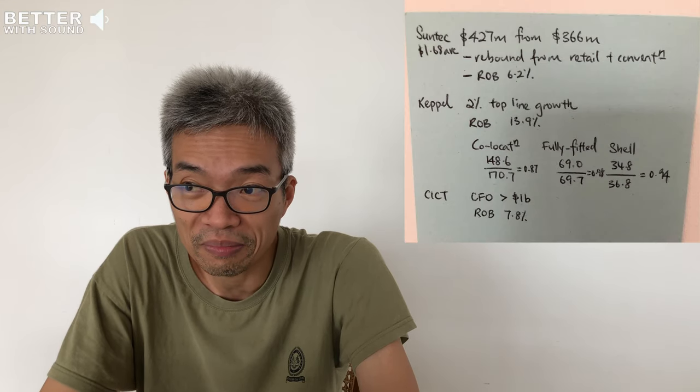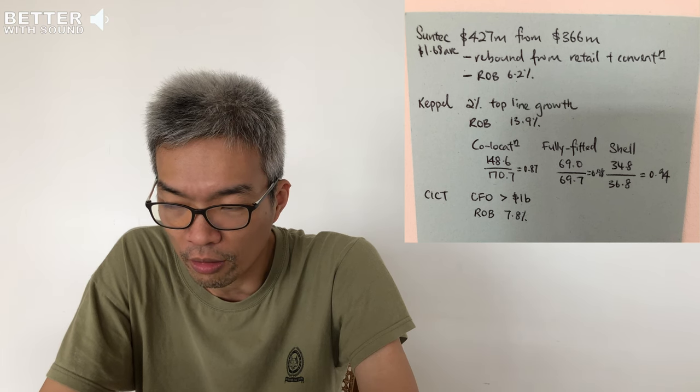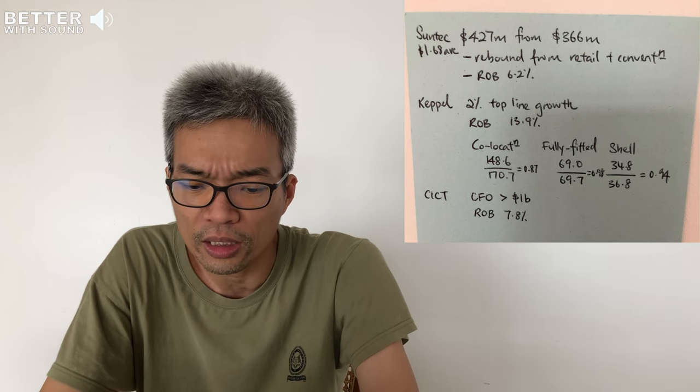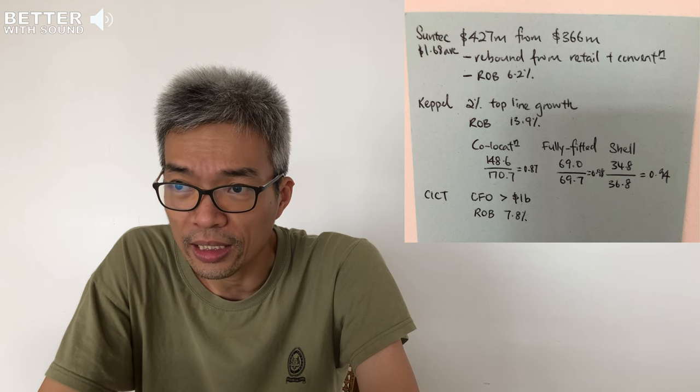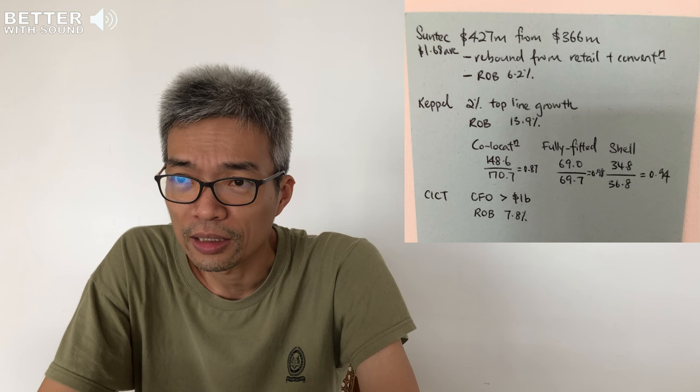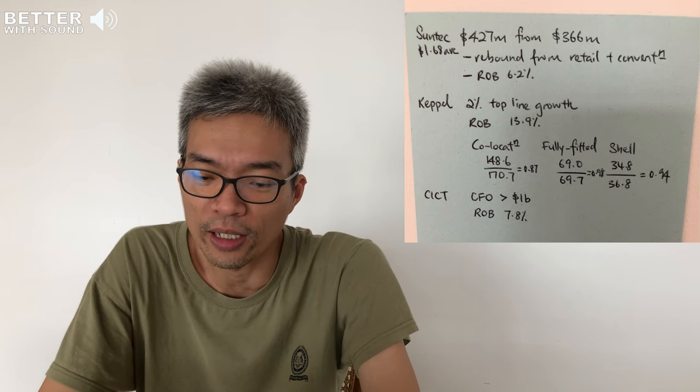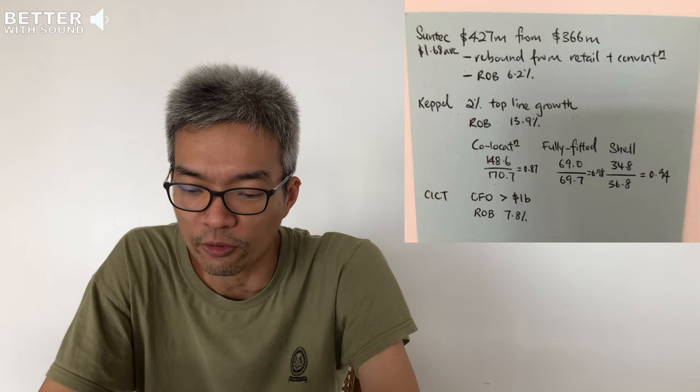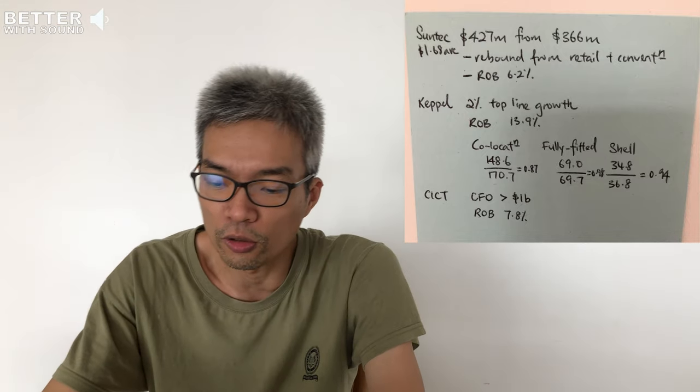Okay, next one is CICT. Definitely due to its merger, the cash flow for operations has exceeded beyond one billion - that's something expected. However, the return on borrowing for CICT, I'm not that sure, but currently the return on borrowing is 7.8 percent. Something I have a concern of, or perhaps is expected, is when the merger of the mall component and office component is bound to bring down the net profit margin if you look at CICT as a whole.